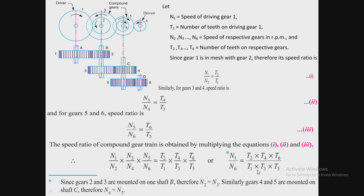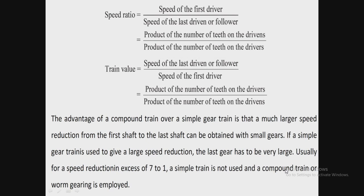Finally we get the equation: N1/N6 = (T2 × T4 × T6) / (T1 × T3 × T5). The speed ratio is defined as the speed of the first (driver) gear to the speed of the last (driven) gear, expressed as the product of number of teeth on driven gears to the product of number of teeth on driver gears. The train value is the speed of the last driven gear upon the speed of the first driver, expressed as product of teeth on drivers to product of teeth on driven gears.